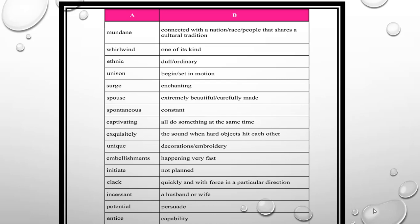Let's start with the first exercise, Activity 4. It is 'Match A with B.' As you can see on the screen, in Column A the words that came in our chapter are given, and their meanings are given in Column B. So let's match them and see the meaning of each word.